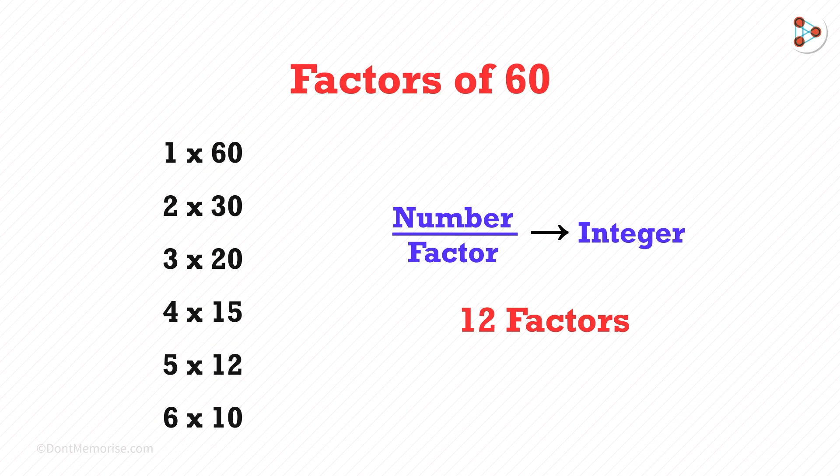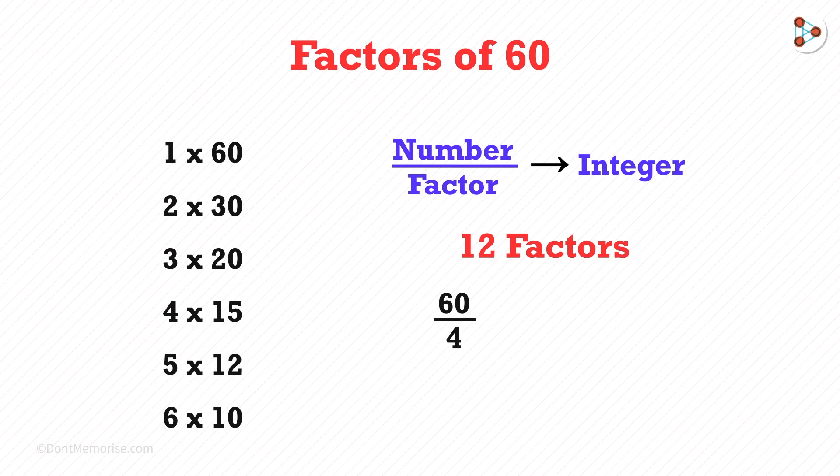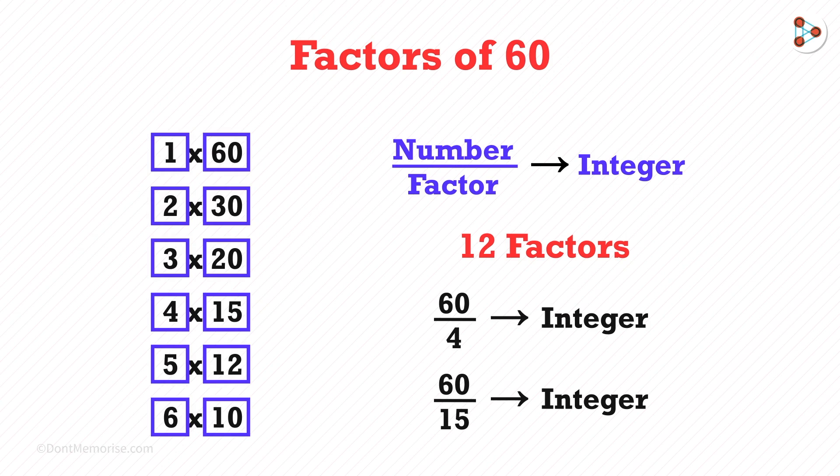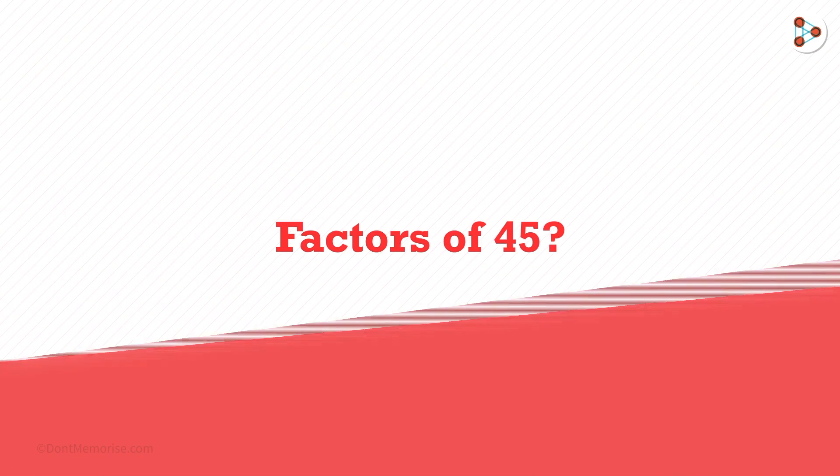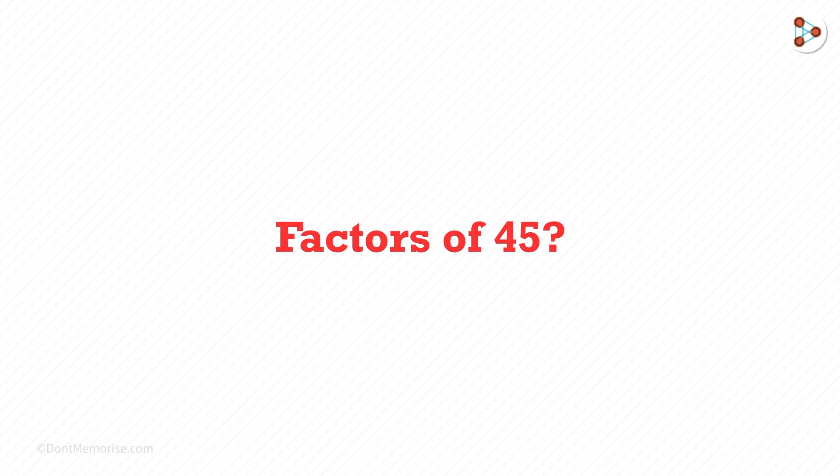If you divide the number by its factors, you get an integer. If you divide 60 by 4, you get an integer without a remainder. Then, 60 divided by 15, you get an integer without a remainder. So, there are 12 factors in 60. Same concept used. You can create the list of factors for any number using this method.